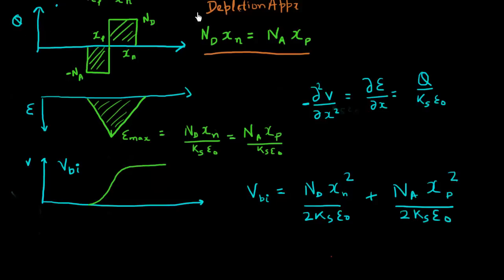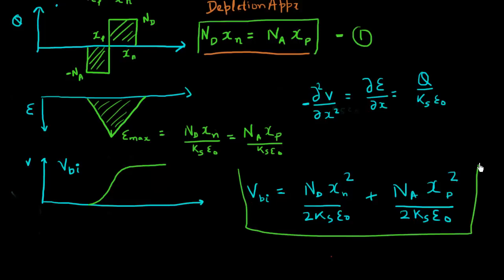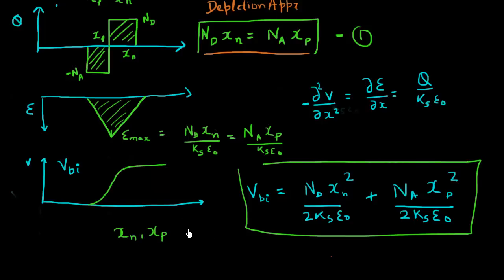So now I have two relationships. This is equation number one — the charge neutrality condition — and this is equation number two — the built-in voltage expression. I have two variables, x_N and x_P, and two equations, so I'll complete the solution in the next video.